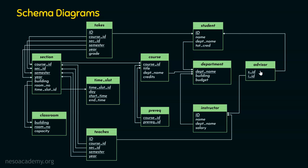Let's see how the instructor and section relationship are maintained. Here is the instructor relation and here is the section relation. An instructor will be teaching a particular section, so instructor teaches this section. This section will be in a classroom, and this classroom is in a particular building, with a room number and capacity. Also, student takes a course — so the student relation and the course relation are linked, and you can see the 'takes' relationship connecting them.